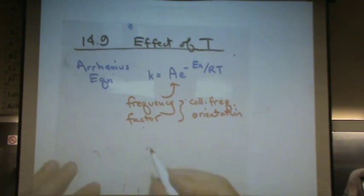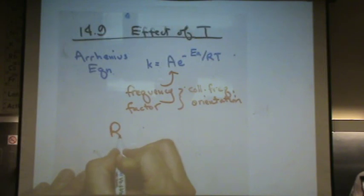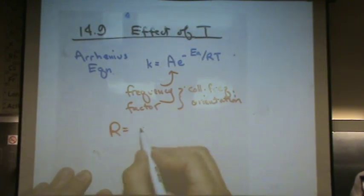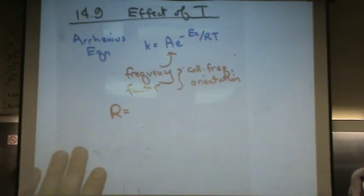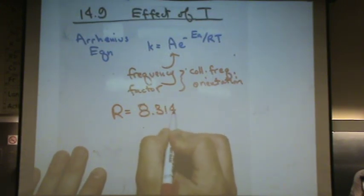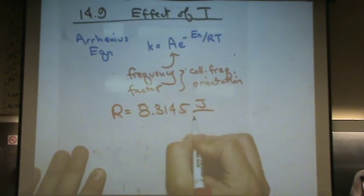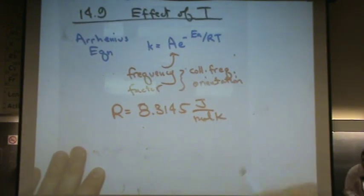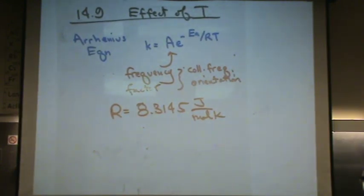Okay, R, that's the R you've seen before. R is equal to, which R do you think it is? It's 8.3145 joules per mole Kelvin. If you're not using the ideal gas law, it's probably this R. You have to use this R because it's in units of joules.